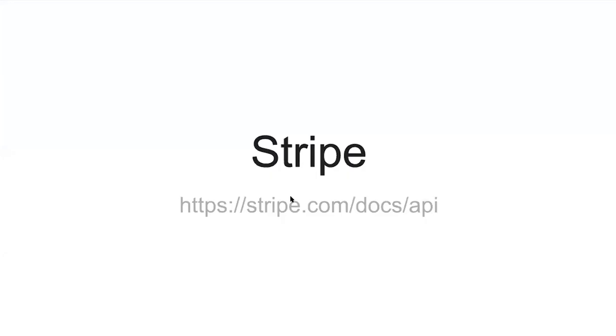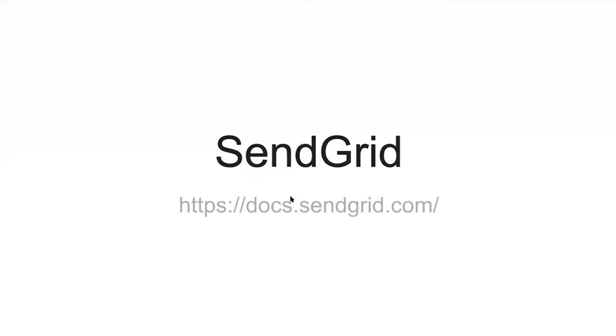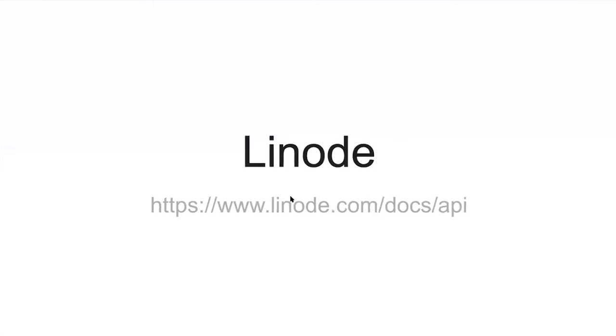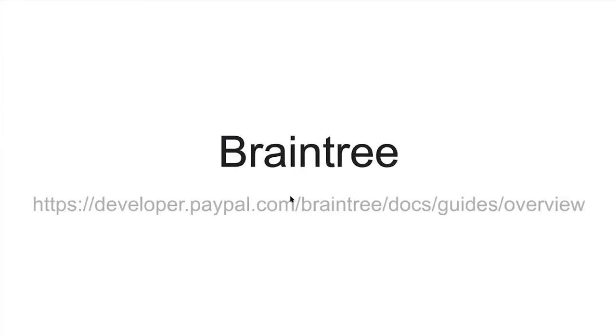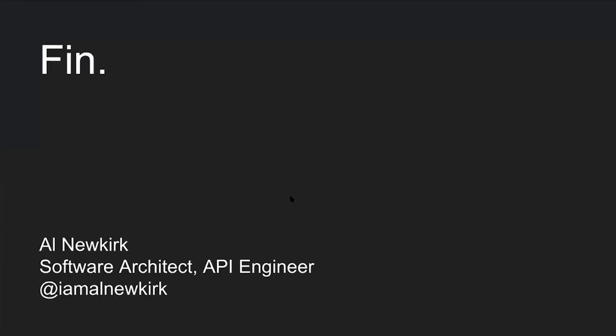First up is Stripe, which provides a payment processing API. There's SendGrid, which provides an email delivery API. There's Linode — I work there currently — they provide an infrastructure automation API. GitHub provides an API around their source code management system. Postmark is another email service provider with an email delivery API. PayPal provides a payment processing API. And finally, Braintree — recently acquired by PayPal — also provides a payment processing API. That concludes my presentation. Are there any questions, suggestions, comments, or feedback?